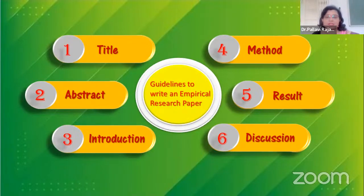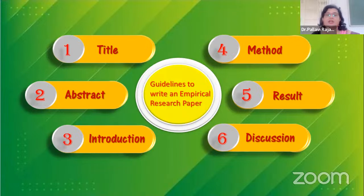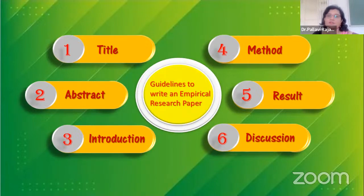The abstract provides the summary of the empirical research paper. It should contain a statement of the problem, a brief description of the method, a brief discussion about the result, as well as the conclusion. Then next is the introduction.